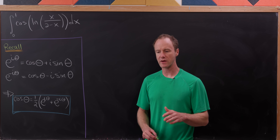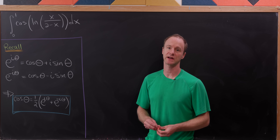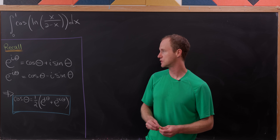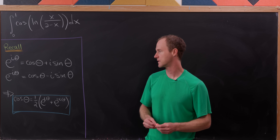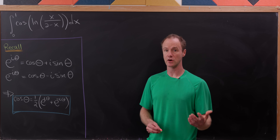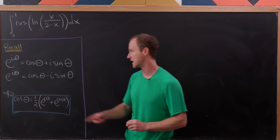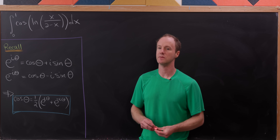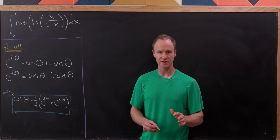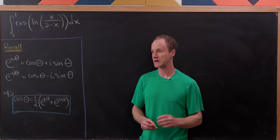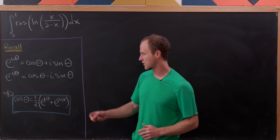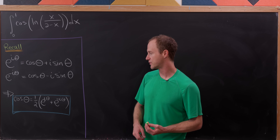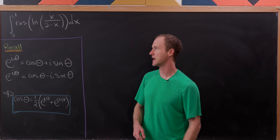Along the way we're going to make use of Euler's formula for the complex exponential, which says that e to the i*theta is cosine theta plus i*sine theta. And then by the evenness of cosine and the oddness of sine, e to the minus i*theta is cosine theta minus i*sine theta, which allows us to solve for cosine as one half times (e^(i*theta) + e^(-i*theta)).